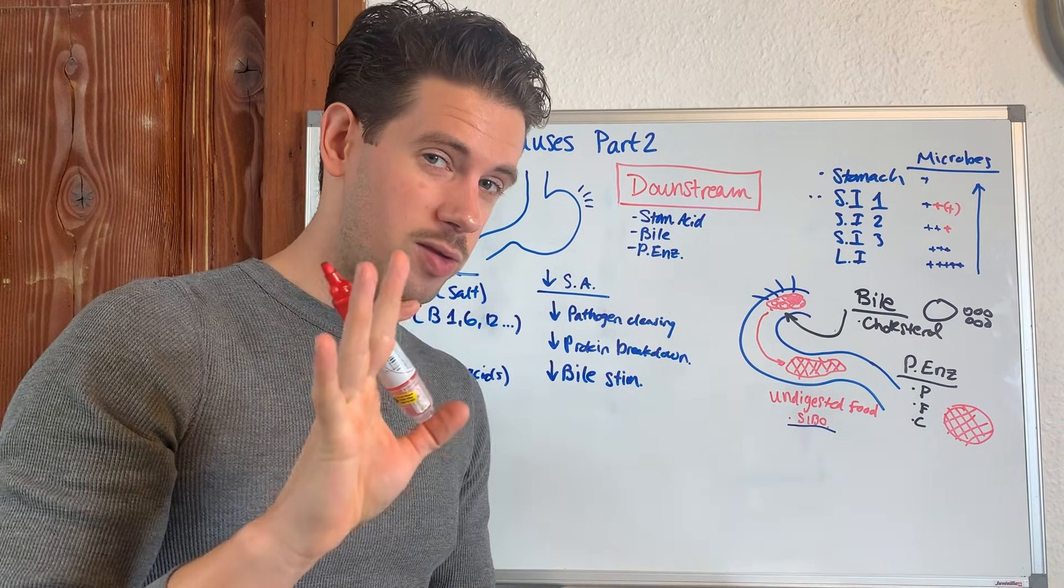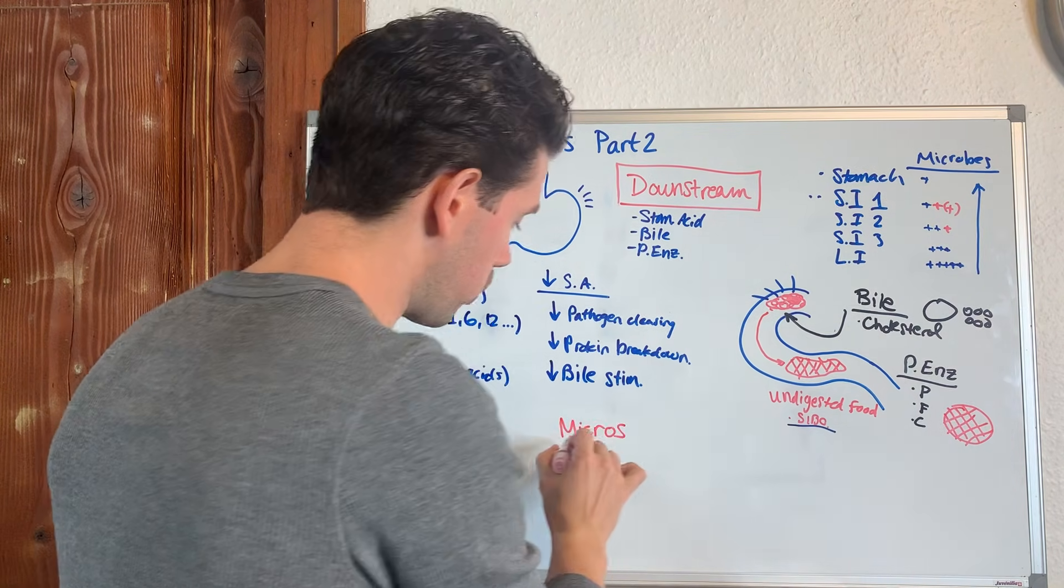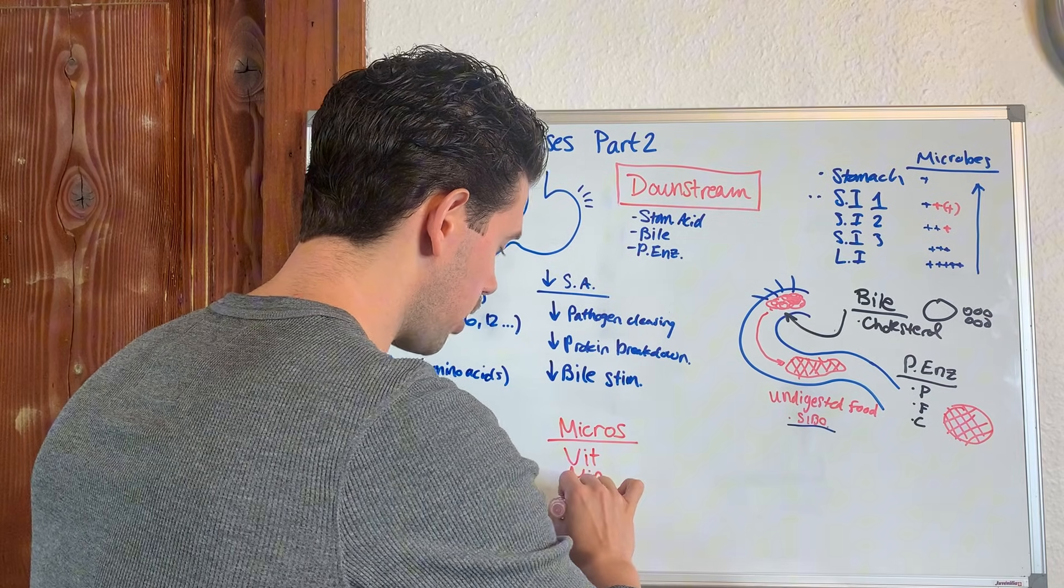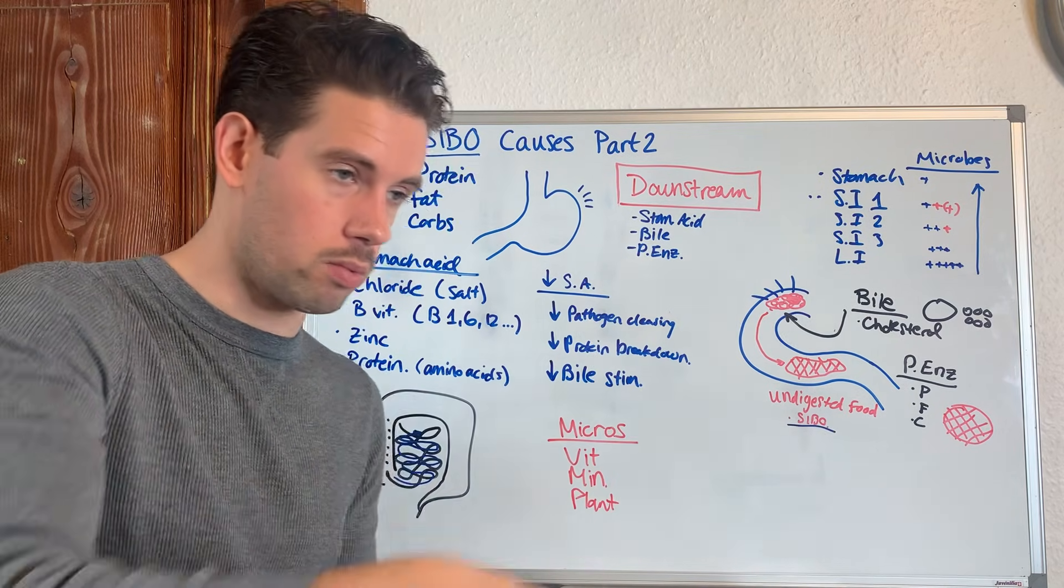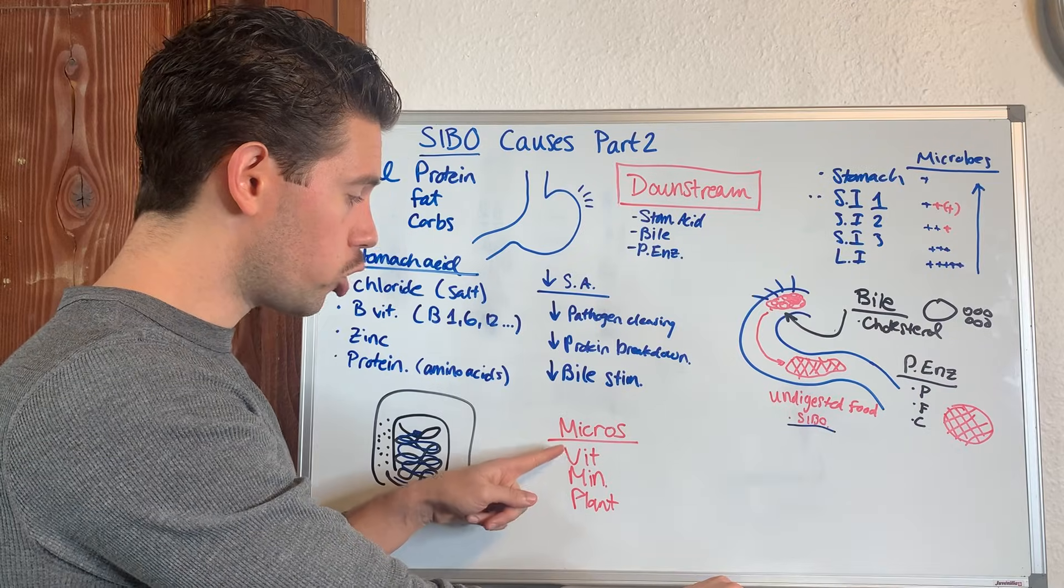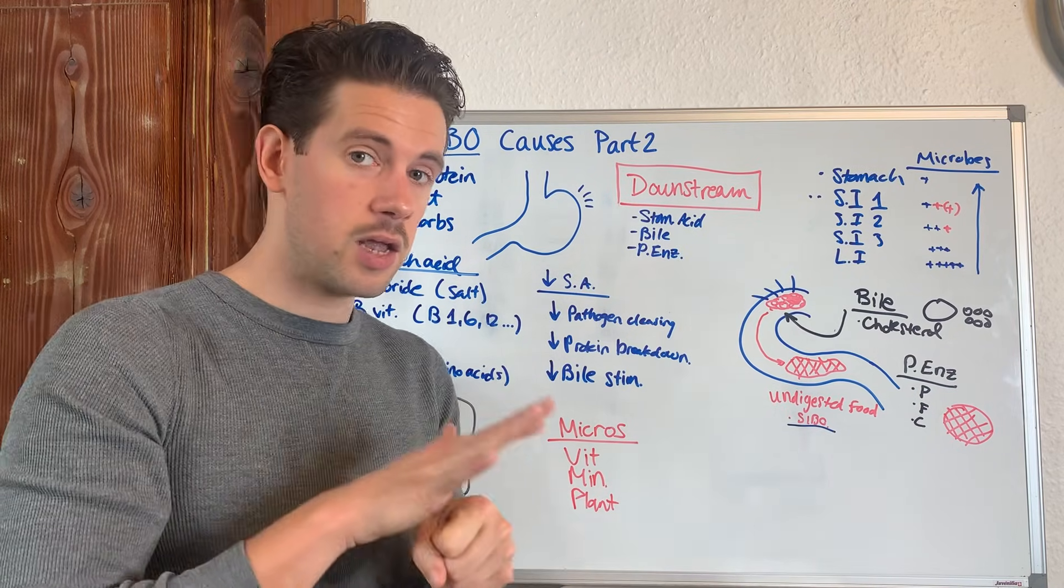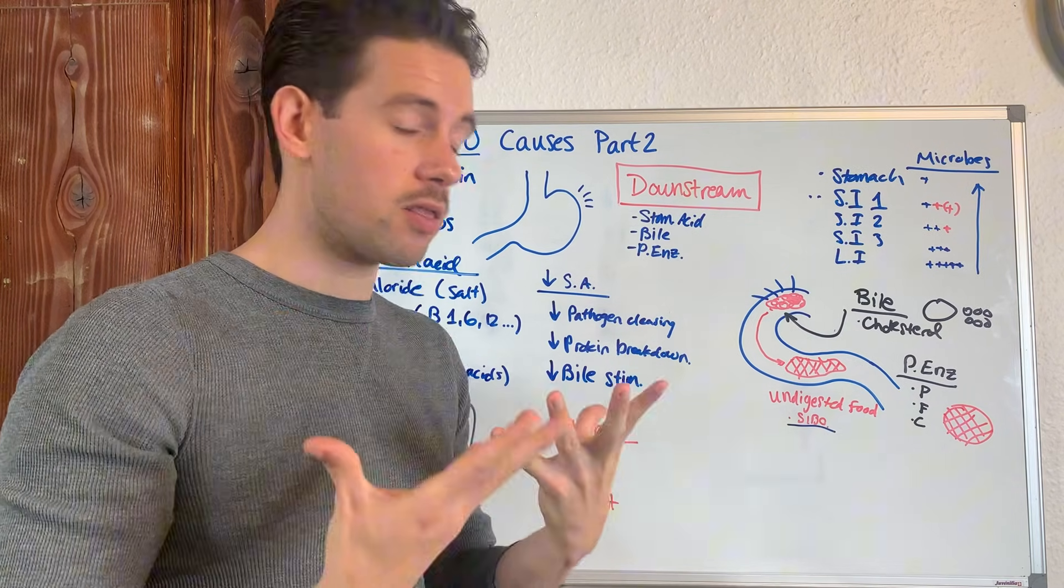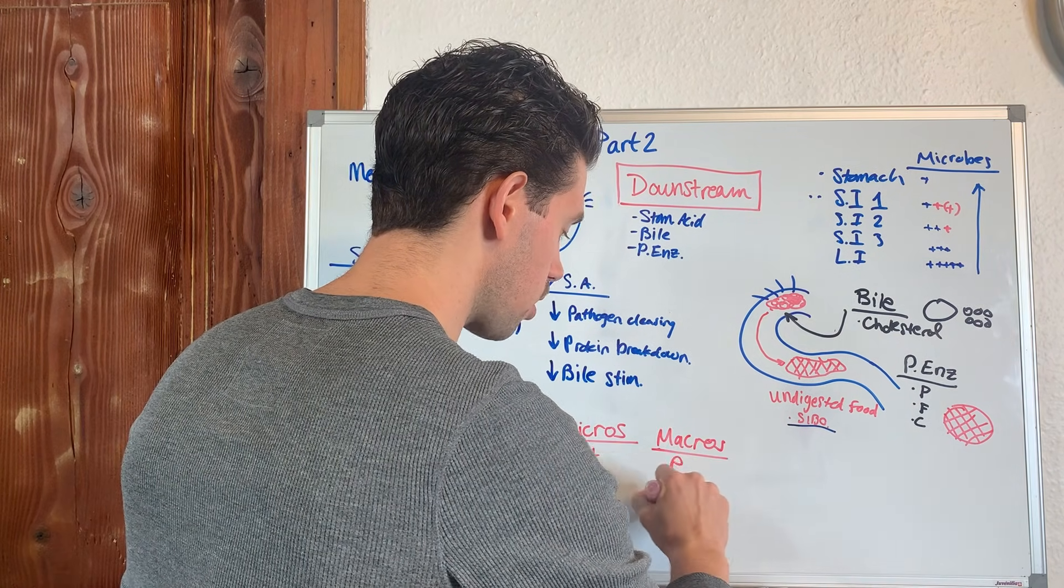This will be my last soapbox. Your micronutrients—your vitamins and minerals—and plant medicines, plant compounds, polyphenols, anything along those lines, with your micronutrients, can be used by the body if the body has an abundance of macros: proteins, fats, and carbs.